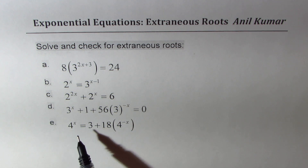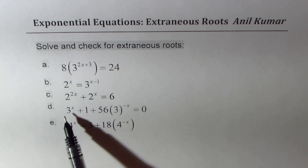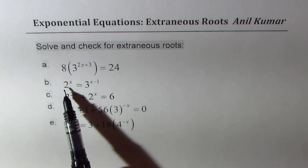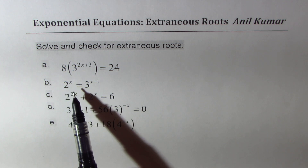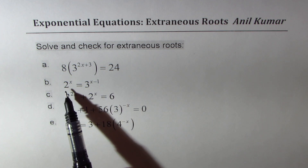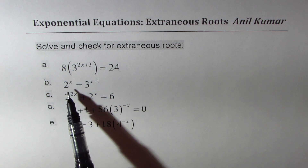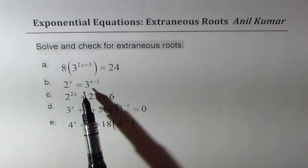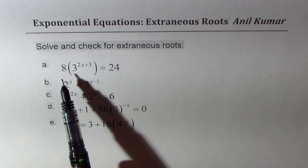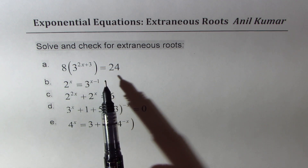The last three examples are kind of quadratic equations. The second equation, 2 to the power of x equals 3 to the power of x minus 1, has different bases, so we need to use logarithms. The very first one can be solved straight away.